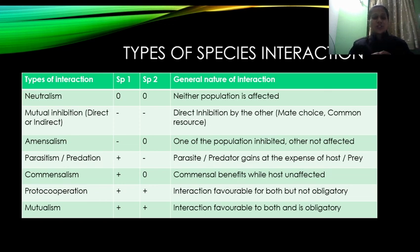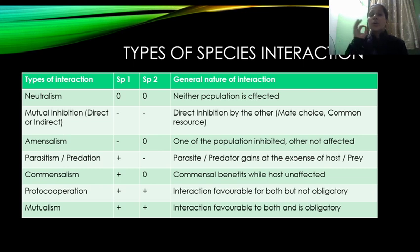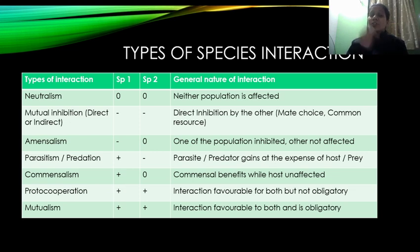इसके बाद का जो association है उसे कहते हैं commensalism। Commensalism में — it's a positive and zero association। एक species को benefit होगा, दूसरे species को कोई फर्क नहीं पड़ेगा — the host is unaffected। हर एक interaction के examples देखेंगे। जैसे Aspergillus niger की बात करें — यह एक fungus है जो penicillin produce करता है।